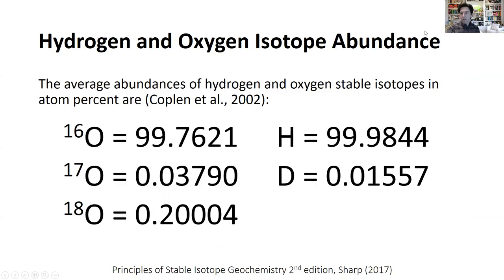At the outset, we want to talk about the basics of the abundance of these various isotopes. When we're talking about water, we're talking about hydrogen and oxygen isotopes. Shown here is the average abundance of hydrogen and oxygen isotopes in atom percent in the earth's system. We've got three stable oxygen isotopes. First, there's oxygen-16, which consists of eight protons and eight neutrons. By far and away, this is the most abundant variety of oxygen — over 99.7% of oxygen in the earth is this particular variety.